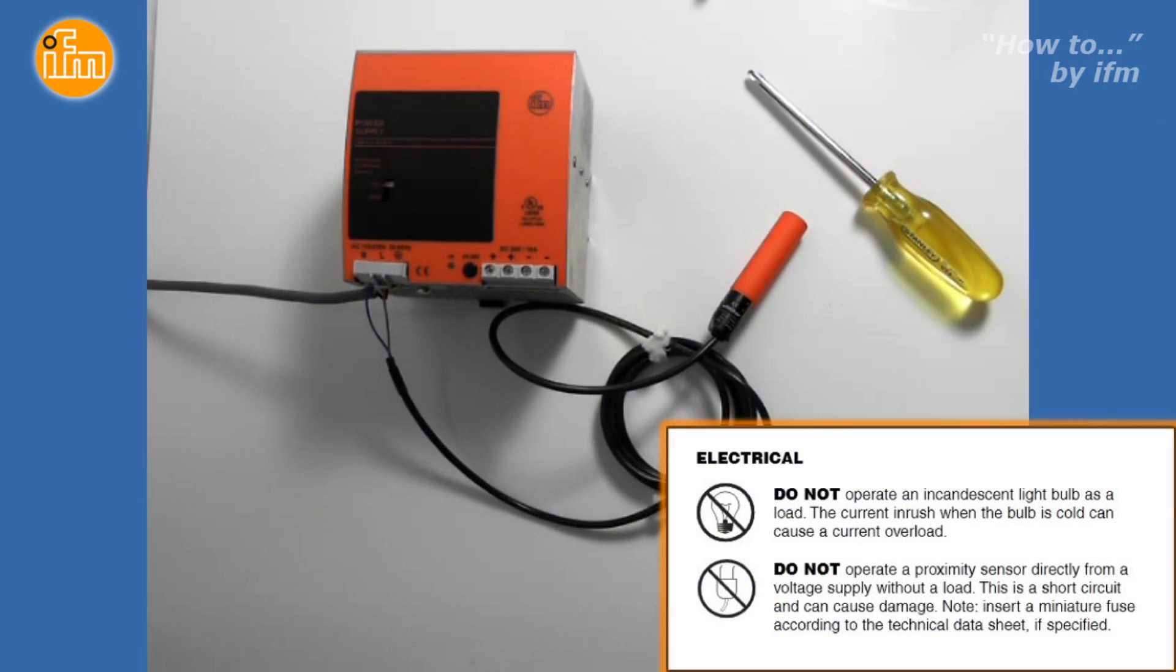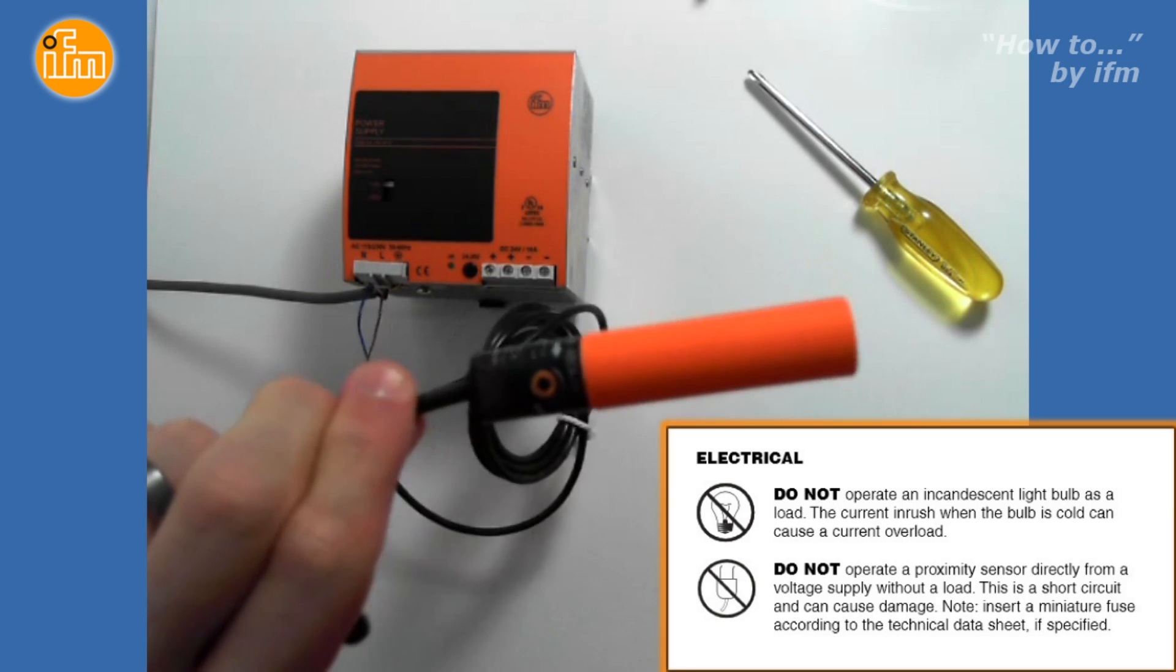As seen here, a sensor connected directly to the power supply without a load is incorrectly wired. When the sensor is tripped, the circuitry in the sensor will overload and the sensor will no longer function.